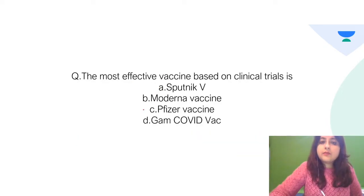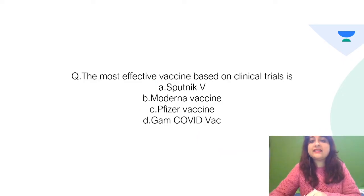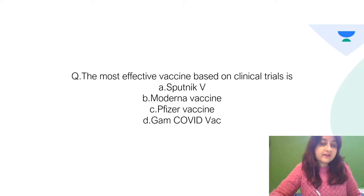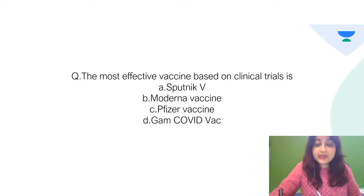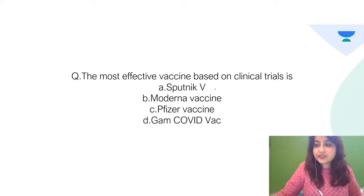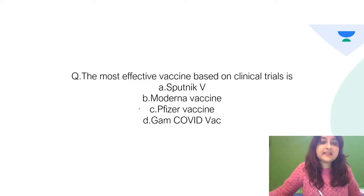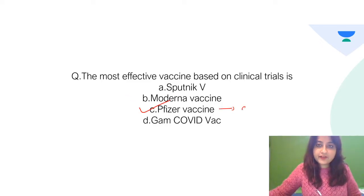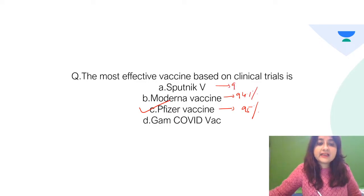The most effective vaccine based on clinical trials is the Pfizer vaccine, which has an efficacy of 95%. The Moderna vaccine has an efficacy of 94.1%. The Sputnik vaccine has a vaccine efficacy of 91.4%.